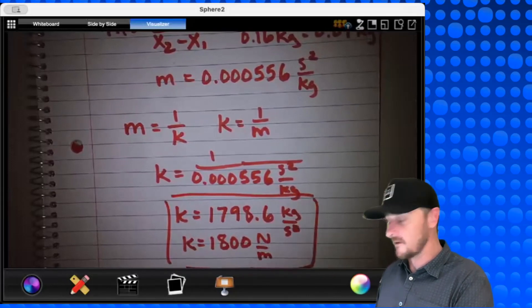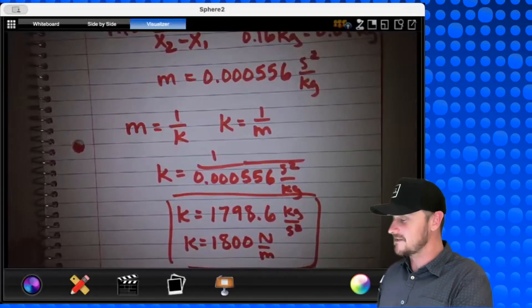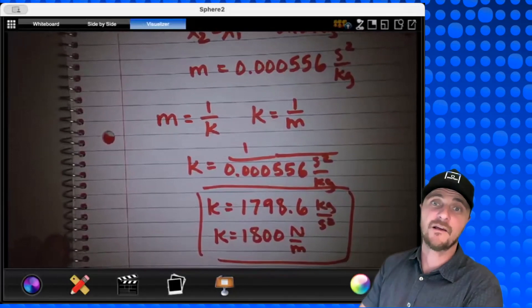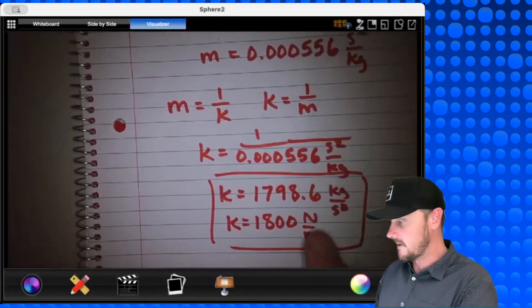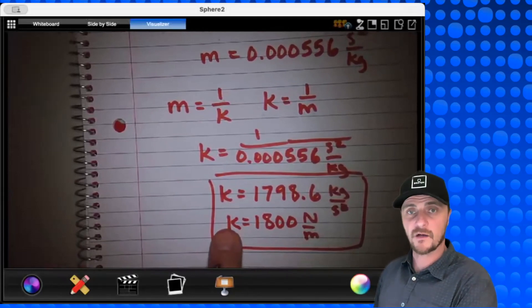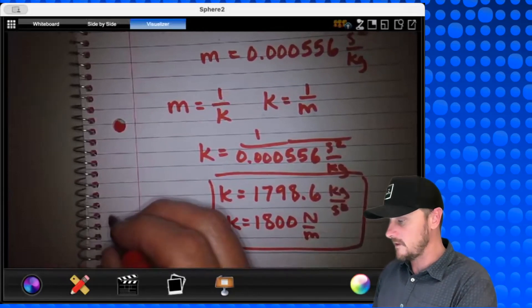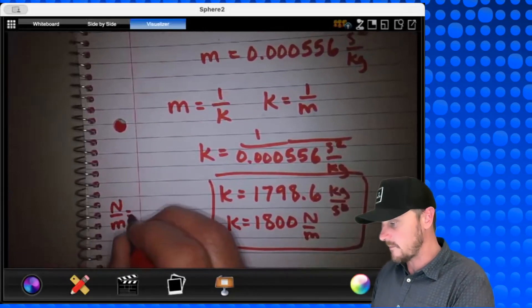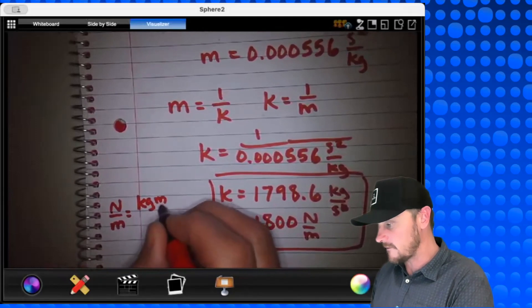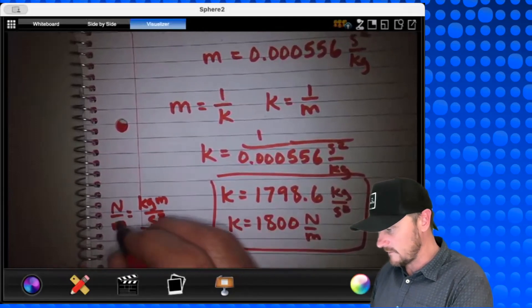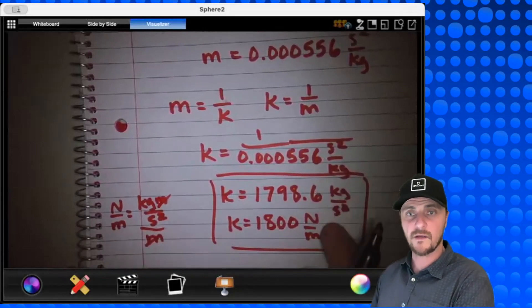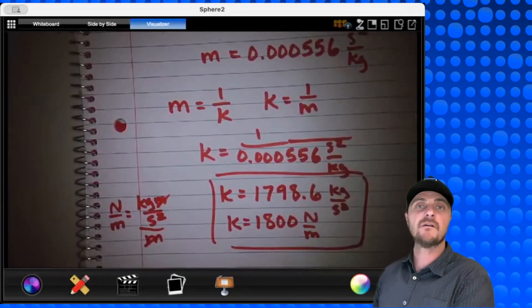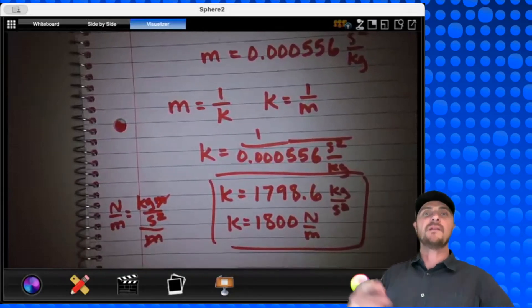And I'll go ahead and put newtons per meter there, and if you want to see the unit analysis, check it out. What I'm going to do is kind of a reverse unit analysis. We know that k, spring constant, is measured in newtons per meter, so I'm going to go newtons per meter, and remember, a newton is a kilogram meter per second squared. All over that meter, the meters cancel out, and look at that. You got kilograms per second squared being equivalent to newtons per meter.